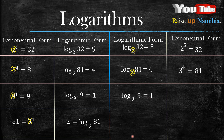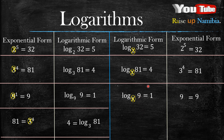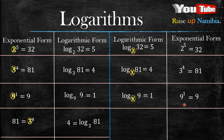Let's check another example. What is your base? Your base is 9. Write your 9 and then your equal sign. Because you already wrote your 9, ignore it. Focus on the two remaining numbers and swap them: 9 was on the left-hand side so write it on the right-hand side, while 1 was on the right-hand side so write it on the left. Since there is already a number there, we write 1 as the exponent. And just like that you have converted this into exponential form.